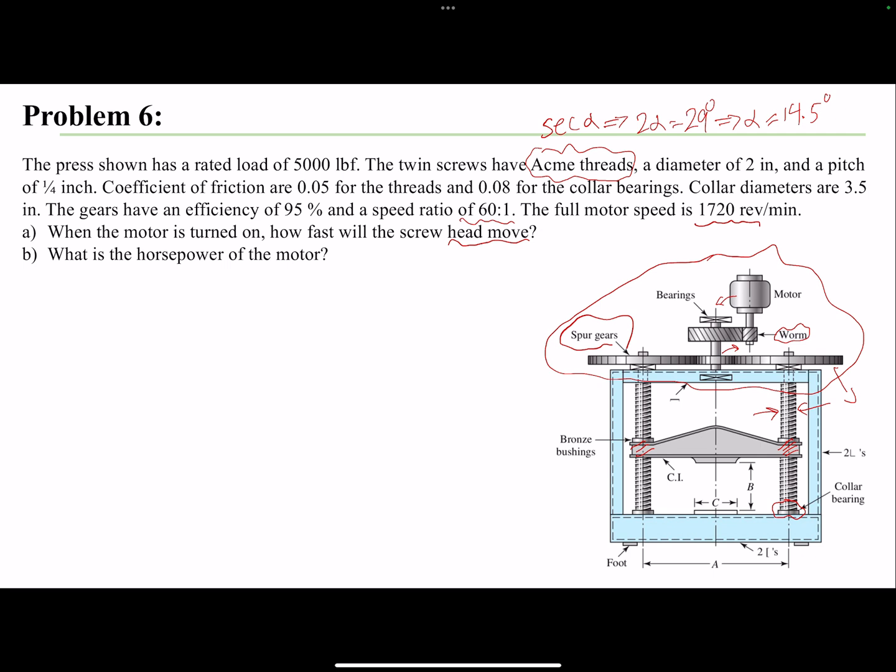Let's write our known values first. So we know this press is creating 5000 pound-force, and then we can divide that because we have two screws, we can call each 2500, and overall would be 5000.